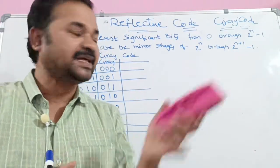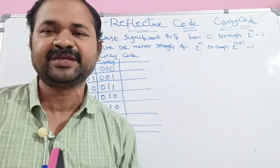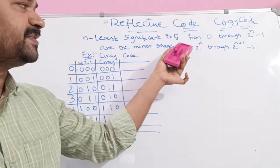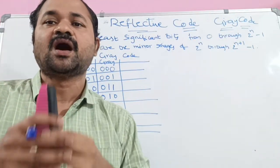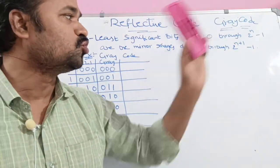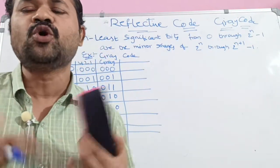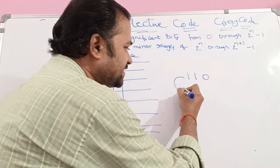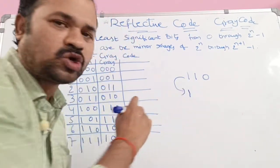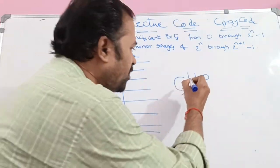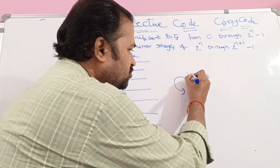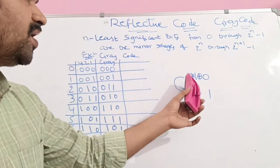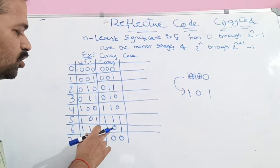Because if we consider the Gray code, we should not consider the most significant bit. We need to consider only the remaining least significant bits. The n least significant bits from 0 through 2^n minus 1 are the mirror images of 2^n through 2^(n+1) minus 1. To calculate the Gray code for a binary number, keep the most significant bit as it is, then perform XOR operations. For example, for 110: XOR of 1 and 1 is 0, XOR of 1 and 0 is 1 — so the Gray code for 110 is 101.